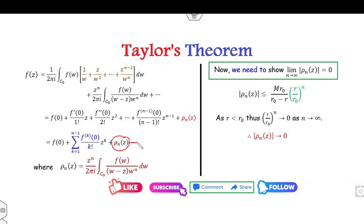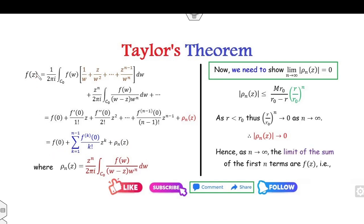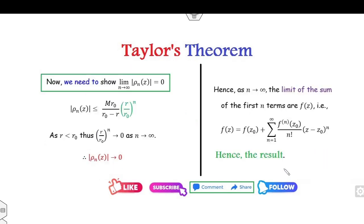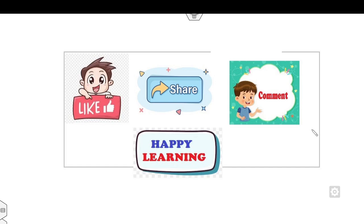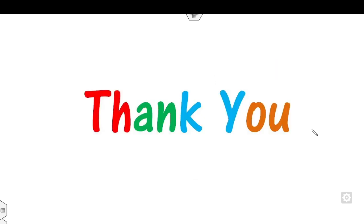Once ρₙ = 0, the power series is convergent and we can write f(z) as the sum from n = 0 to infinity of the power series terms. That is the simple proof of the Taylor theorem. You can write down this proof and try to recall it — it is a very simple proof. The next lecture will cover how to solve problems related to the Taylor series and Taylor theorem. Please like, comment, and share this video with your friends, and don't forget to subscribe to my YouTube channel. Best of luck, students.